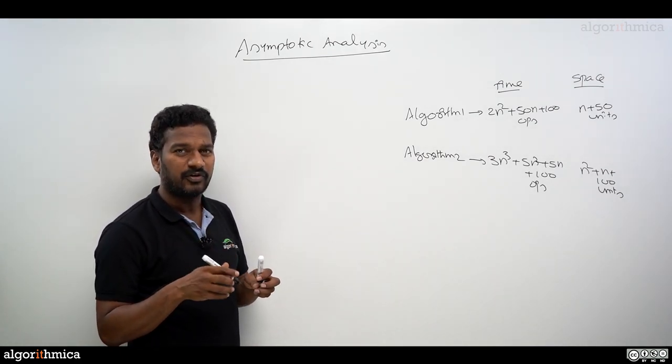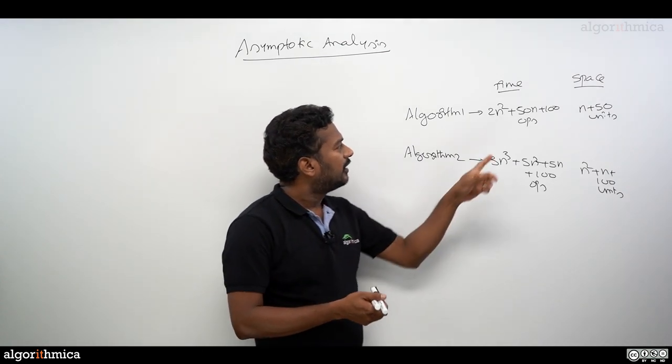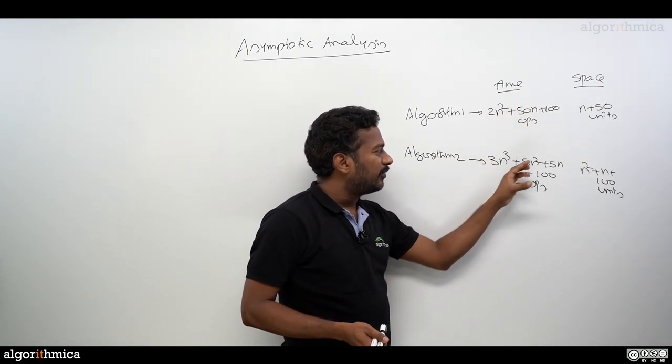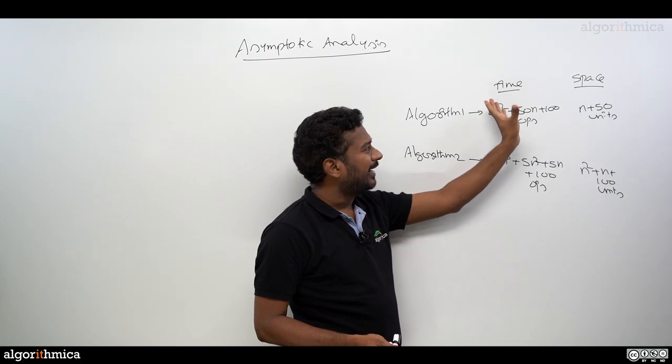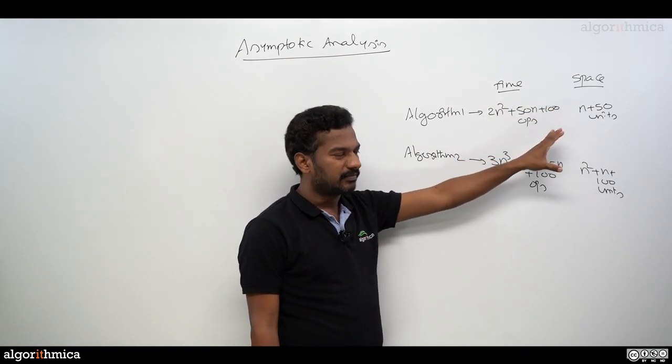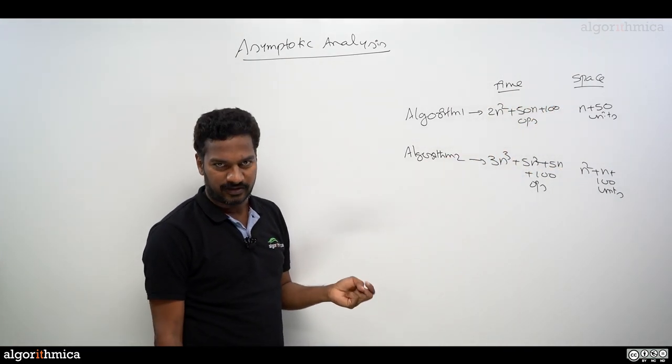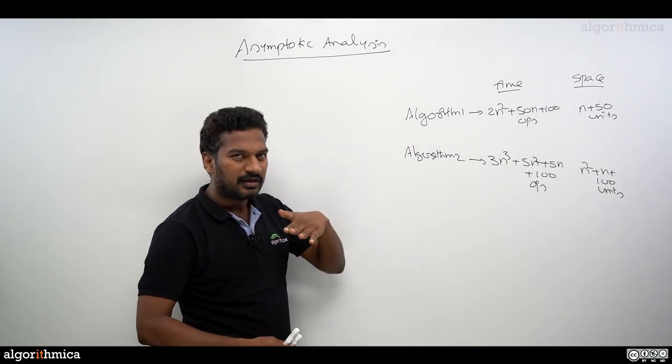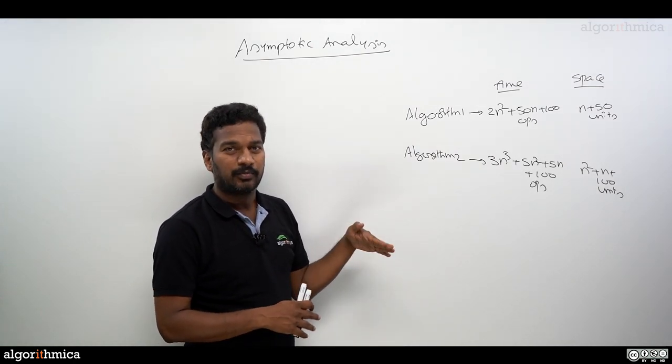This is how you normally analyze algorithms. The steps of the algorithm, if you keep on counting and adding the low-level operations, might give this kind of functions. Both time dimension as well as space dimension, this is what we have done till this point.